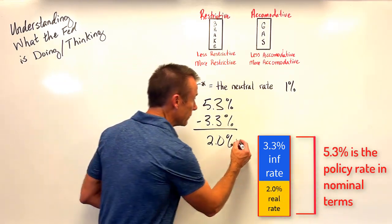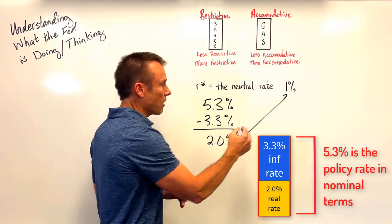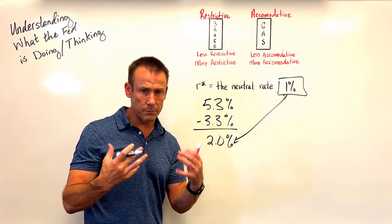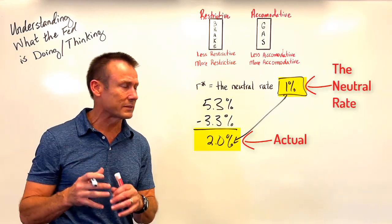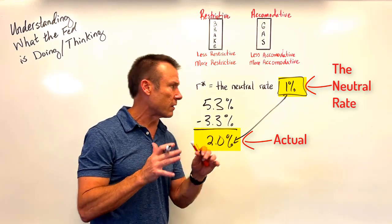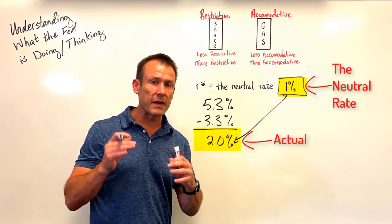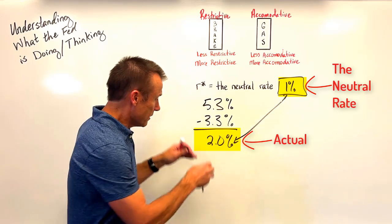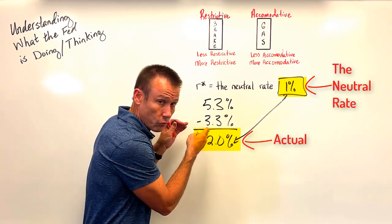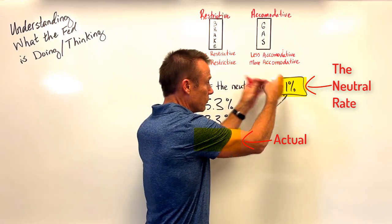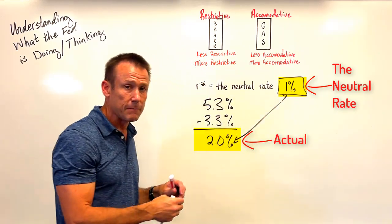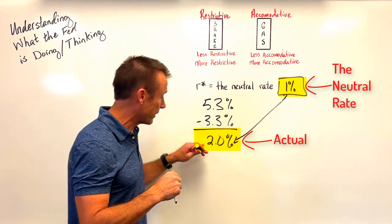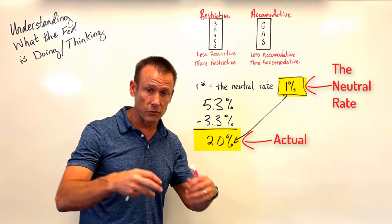To understand monetary policy, we compare that real policy rate to R-star, which Fed officials estimate at around 1% — some put it a little lower, like 0.5 or 0.6. But listening to Fed officials, I'm comfortable saying the neutral rate in real terms is 1%. So 14 months ago, their real federal funds rate was 2.0% versus a neutral rate of 1% — a full percentage point above. They were clearly restrictive.